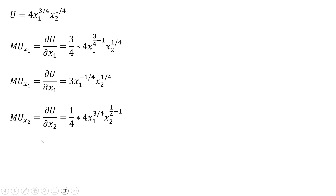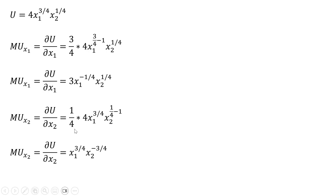Now we'll get the marginal utility of good 2 by taking the partial derivative with respect to good 2. The exponent 1/4 on the good 2 term comes down in front, giving us 1/4 times 4. We subtract 1 from the exponent on good 2. Simplifying: 1/4 times 4 is 1, and 1/4 minus 1 leaves us with minus 3/4.